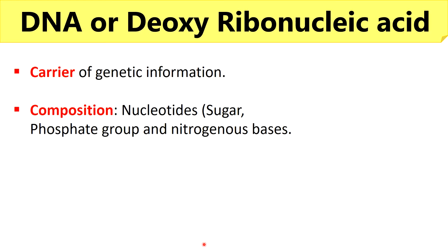Watson and Crick model provides the best way to demonstrate the structure of DNA, or deoxyribonucleic acid. DNA is a complex organic biomolecule which functions as a carrier of genetic information, that passes specific genes of a parent cell to the daughter cells from one generation to the next generation.